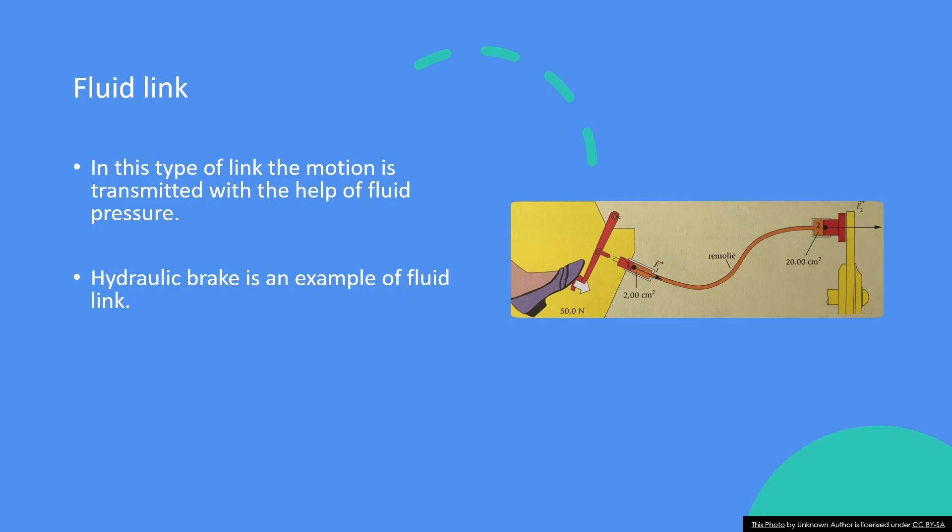Now let's talk about the last type of link, which is fluid link. In this type of link, the motion is transmitted with the help of fluid pressure. For example, hydraulic brake or hydraulic press are examples of fluid link, where we apply a pressure to the foot pedal and the same pressure and force get transmitted to our wheels. So this is known as fluid link.